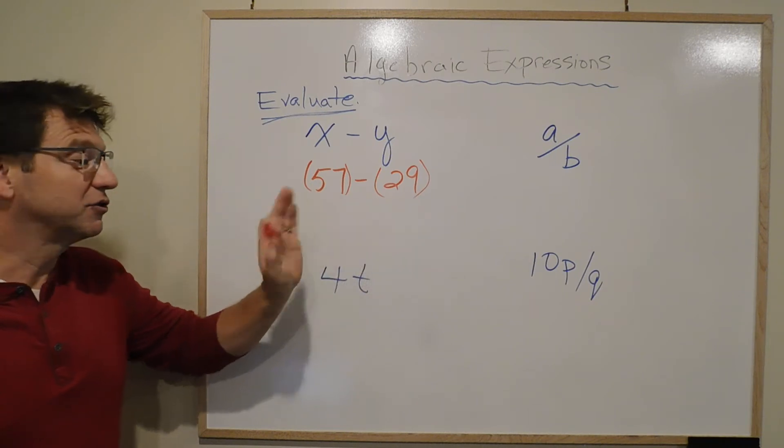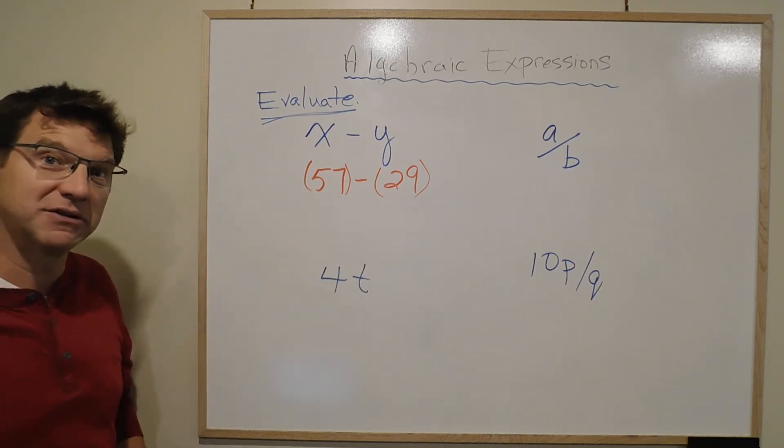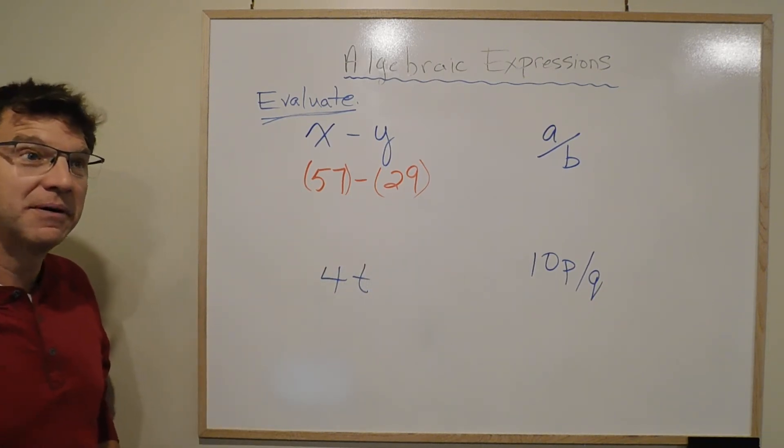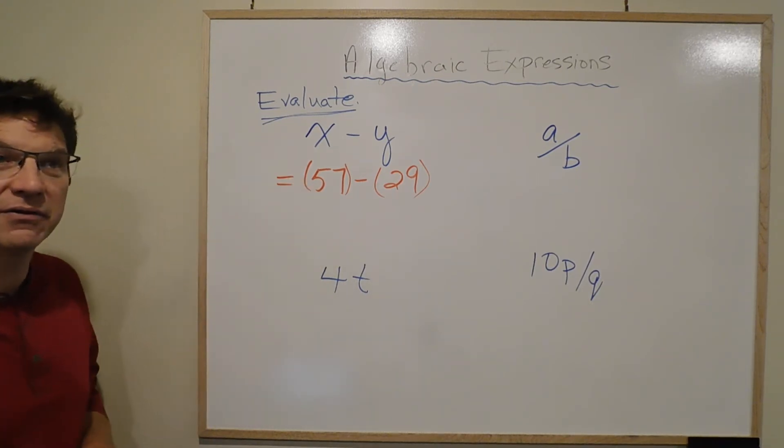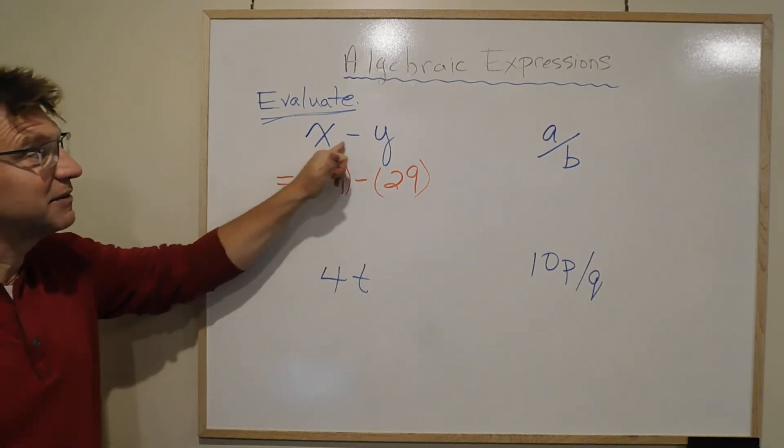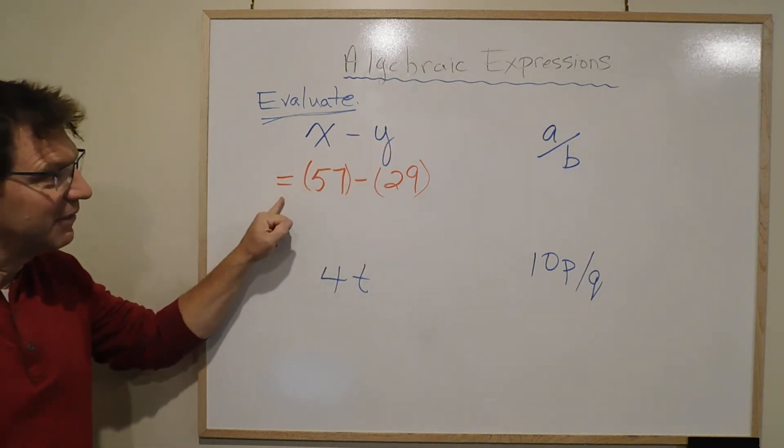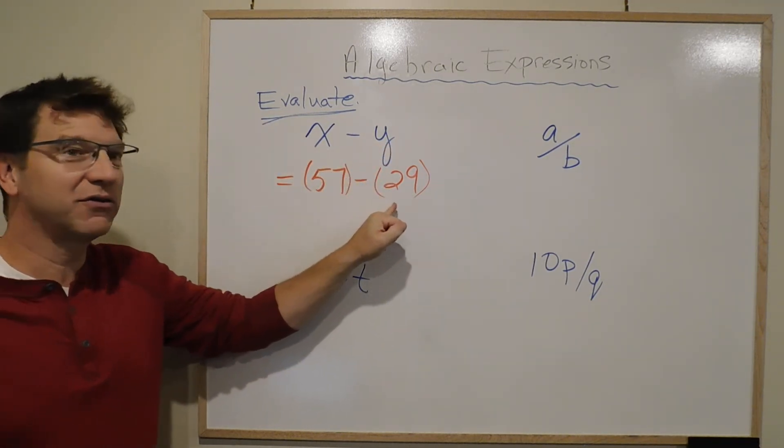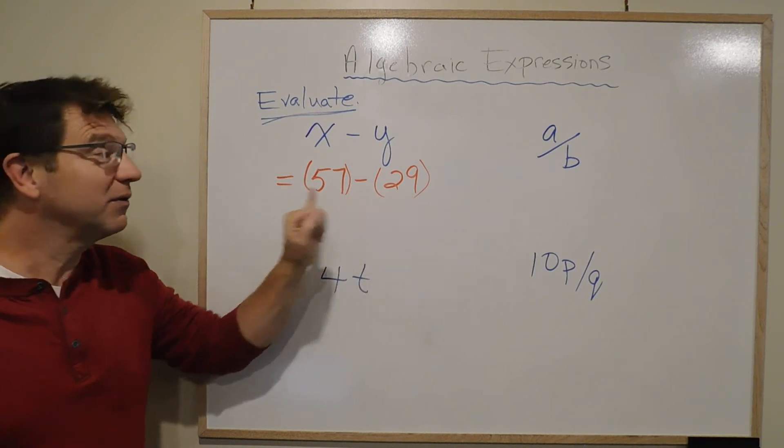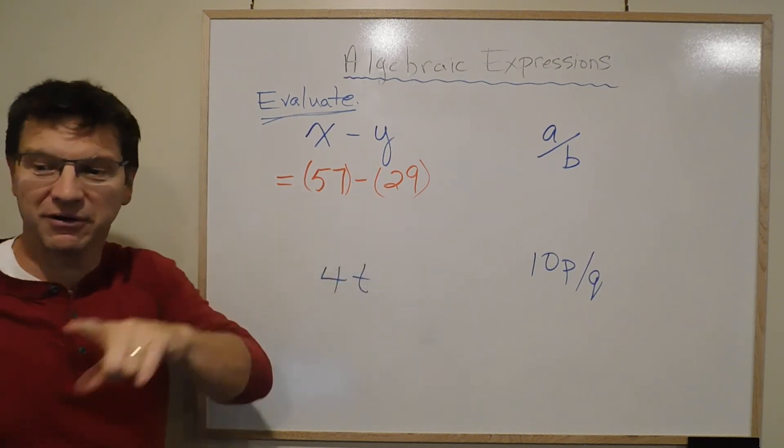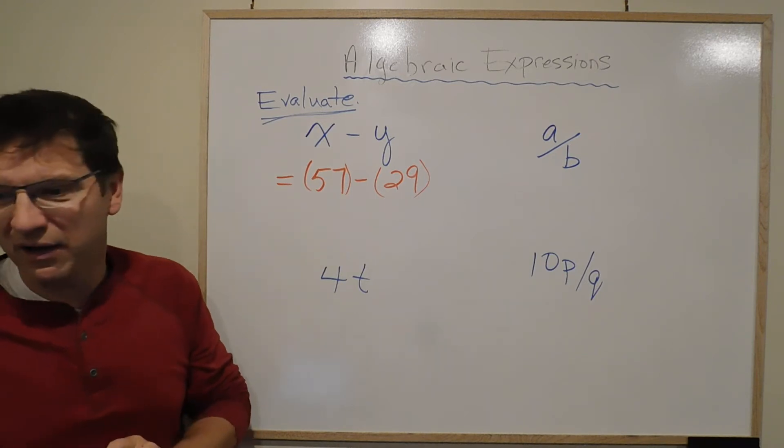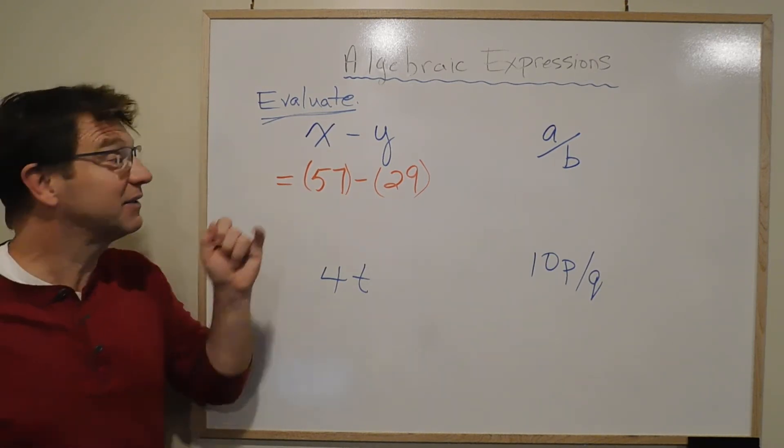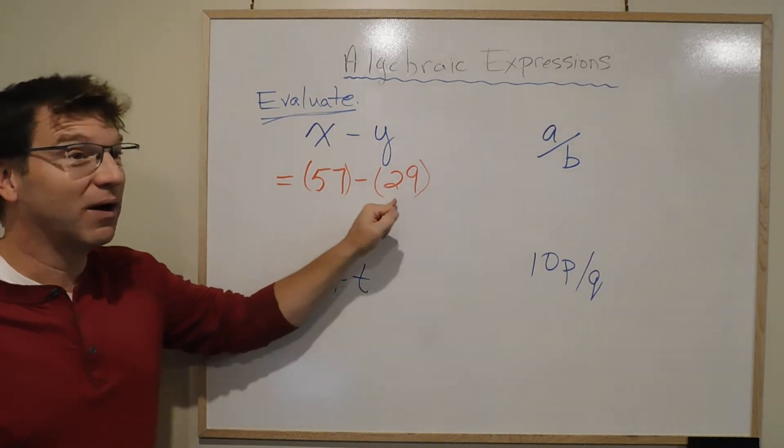And I'll show you why in a few minutes why the brackets are useful here when we go on to the next one. But really, we put an equal sign in front, because there was no equal. We say x minus y equals 57 minus 29. And it only equals 57 minus 29 because the question says, evaluate x minus y when x equals 57 and y equals 29.